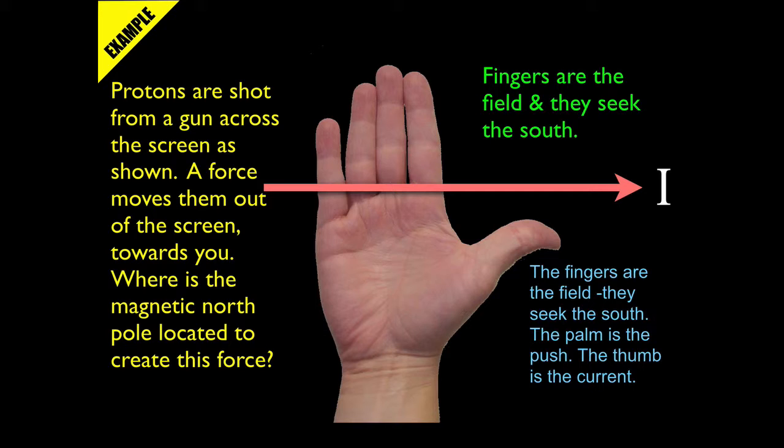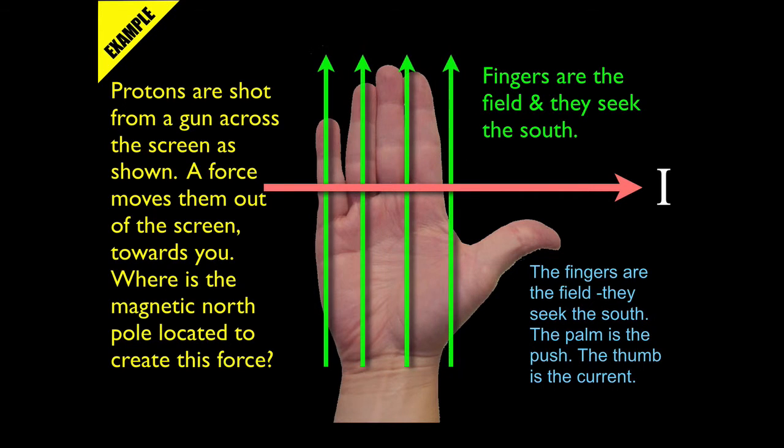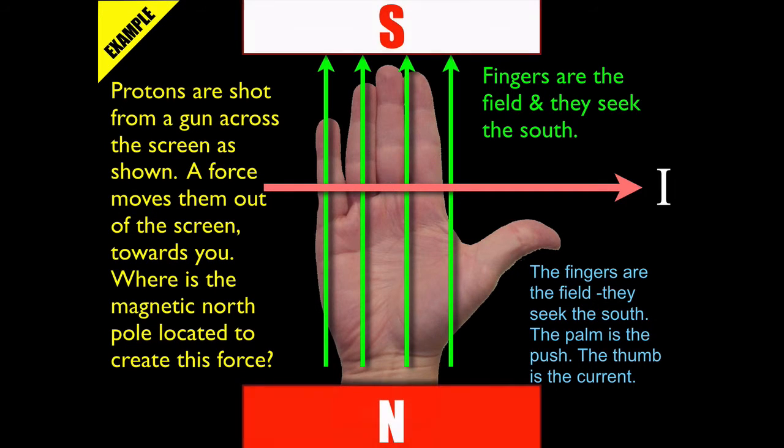Fingers are the field and they seek the south. So the fingers are pointing upwards. That means the south pole is upwards on the magnetic field, which means south is on top of the screen and north is below the screen. So the north pole is going to be on the floor.